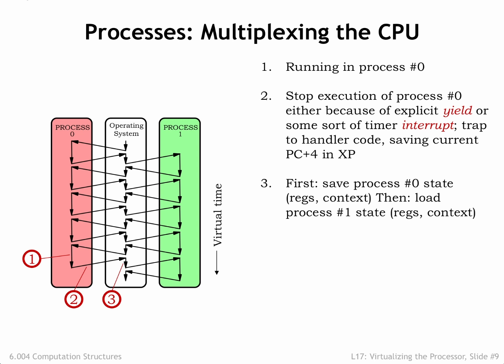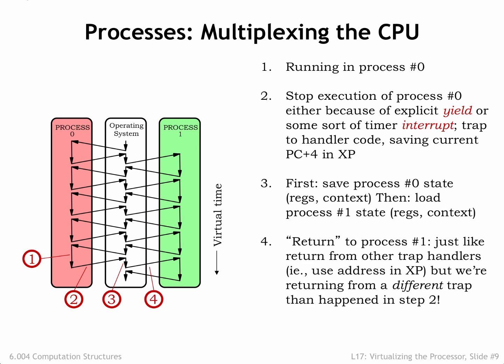The OS saves the state of process 0 in the appropriate table in kernel storage, then reloads the state from the kernel table for process 1. Note that the process 1 state was saved when process 1 was interrupted at some earlier point. The OS then uses a jump to resume user-mode execution using the newly restored process 1 state, and execution resumes in process 1 just where it was when interrupted earlier.